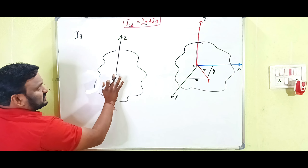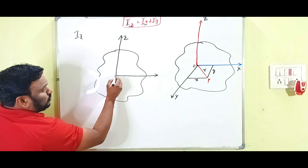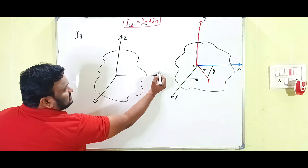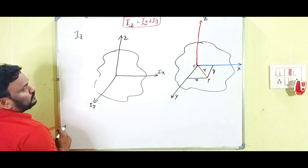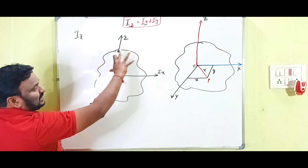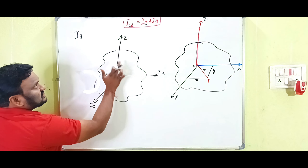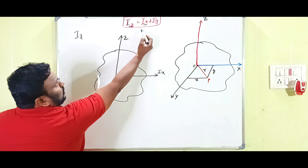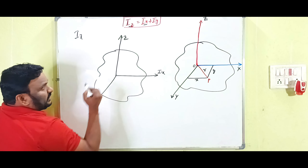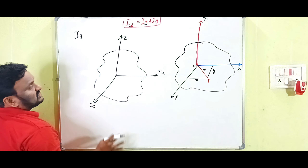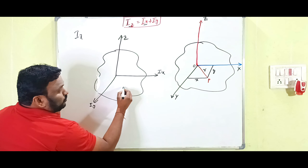This is a plane lamina revolving around the Z-axis. The moment of inertia of the plane lamina about the Z-axis is I_Z, and this Z-axis is perpendicular to the plane lamina. I_Z equals the sum of moments of inertia I_X and I_Y, where I_X is the moment of inertia about the X-axis and I_Y is about the Y-axis. These two axes meet at one point and lie in the same plane.